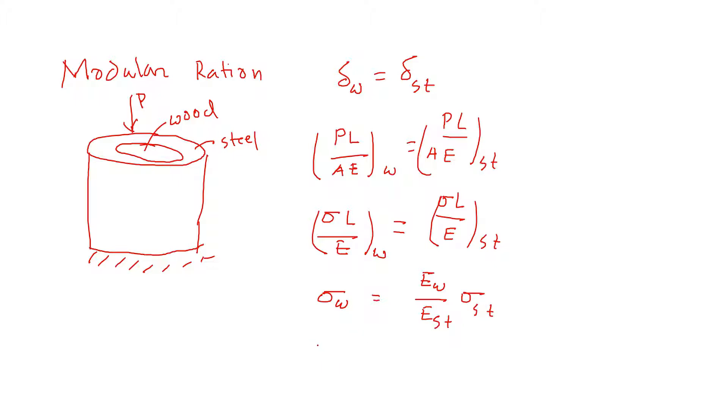In a general formula, we can write sigma A is equal to E of A by E of B sigma B. This E A by E B is called modular ratio. Modular ratio.